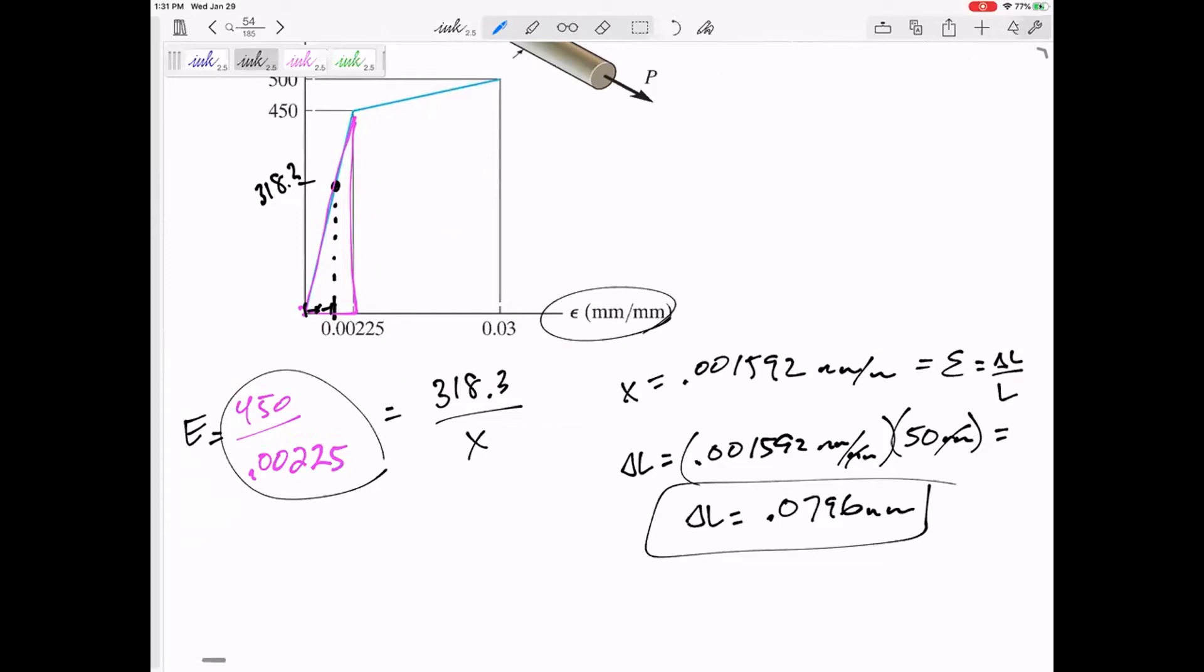So does that make sense? They gave me the force, which was really giving me the stress. And if I know the stress and I have the diagram, I can find the strain. Question didn't ask for the strain. I need to multiply times the length to find the delta L. How about after that P is unloaded? What would the strain be? Zero. Because it's in the elastic region, it would unload back down to zero.